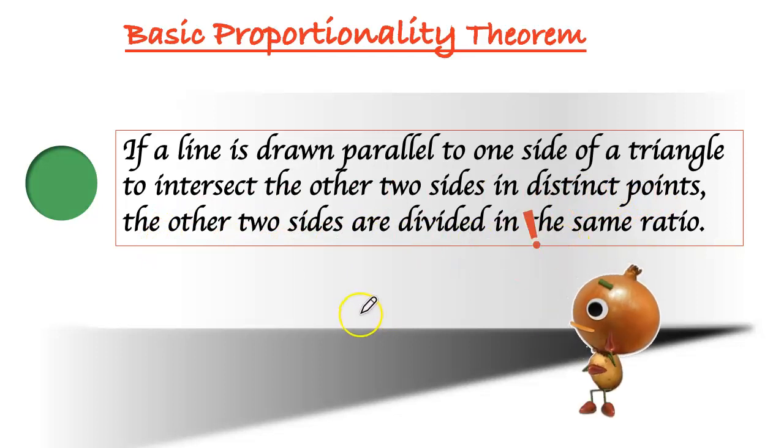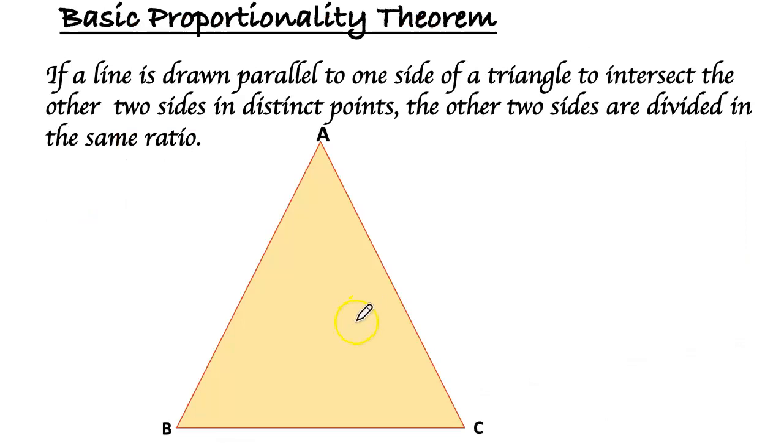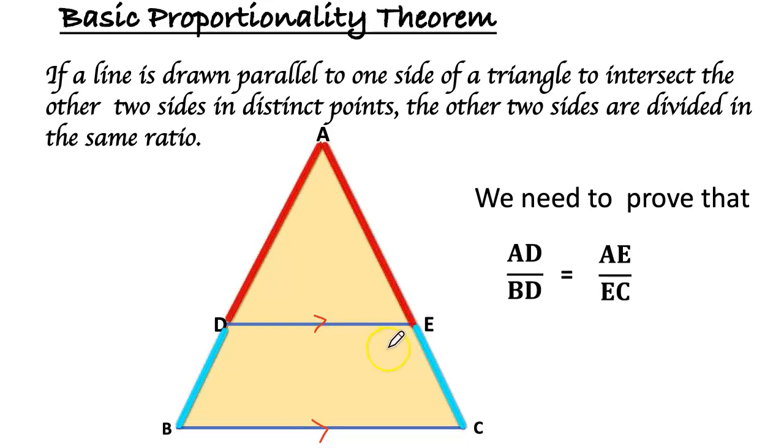Let us prove it. Here, the triangle ABC. The line which parallel to BC is DE. We need to prove that AD by BD equals AE by EC.